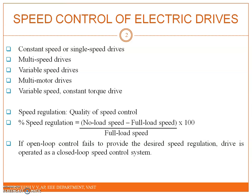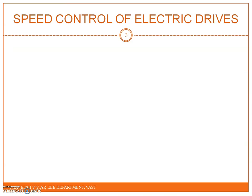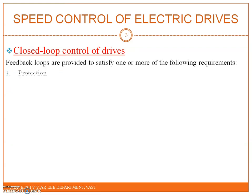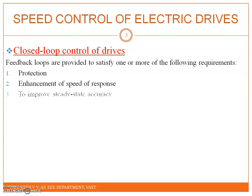In closed loop control we can achieve better speed regulation compared to open loop. The advantages of using closed loop control include protection for safe operation, enhancement of speed of response, improved steady state accuracy, and better steady state tracking capability.